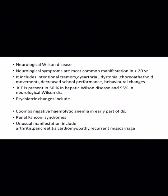Psychiatric changes include anxiety, depression, OCD, or psychosis. There may be Coombs-negative hemolytic anemia as an early part of the disease. It may present with renal Fanconi syndrome. Unusual manifestations of Wilson disease include arthritis, pancreatitis, cardiomyopathy, recurrent miscarriage, nephrolithiasis, etc.